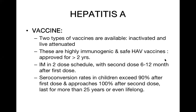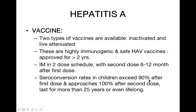There are vaccines available for viral hepatitis A: inactivated and live attenuated vaccines. These vaccines are highly immunogenic, safe, and mainly approved for children more than two years of age. They are given intramuscularly in a two-dose schedule, with the second dose given six to twelve months after the first. Seroconversion exceeds 90% after the first dose and approaches nearly 100% after the second.